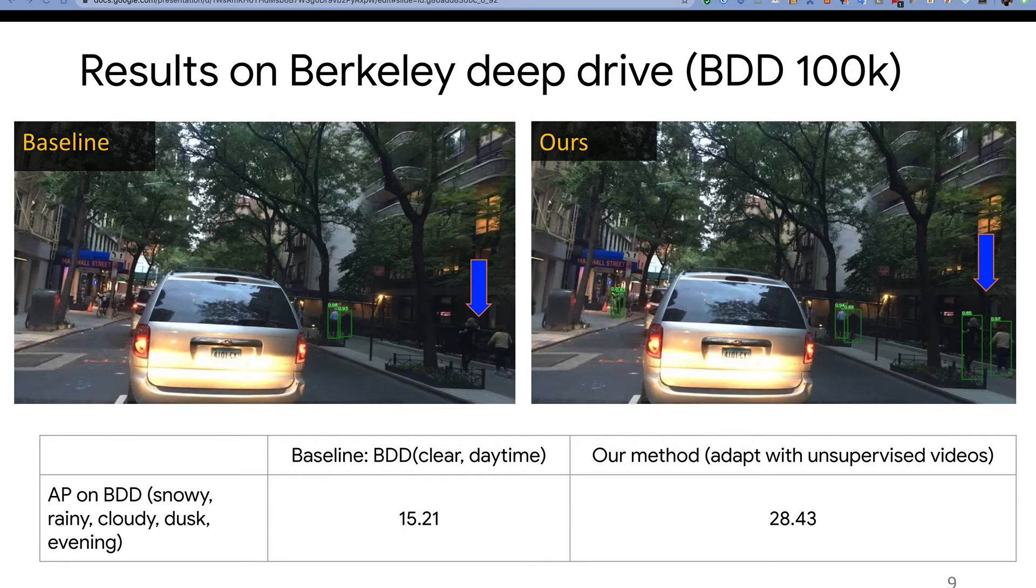The baseline model fails to detect some pedestrian images taken during dusk, but our work can recognize them correctly. The green box in the corner shows that in our improved detection, our model can recognize the dusk image successfully.